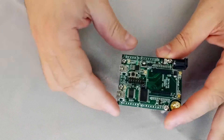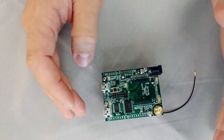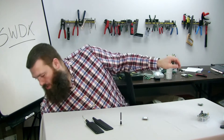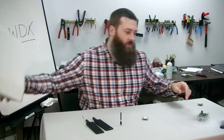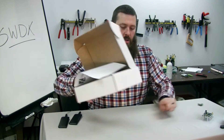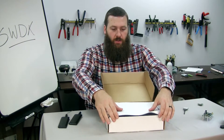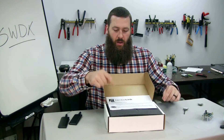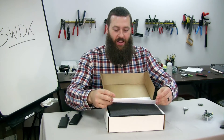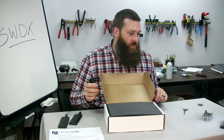The Skywire Development Kit is a single board with a few interesting features. When you order your kit, it comes not only with the main board but a whole box full of things. First off, there's a piece of paper that tells you to go to the website and download the documentation.